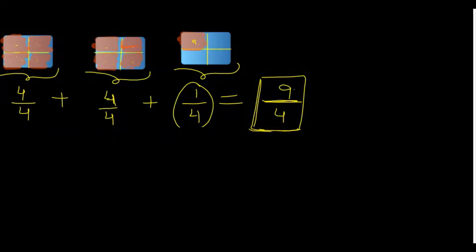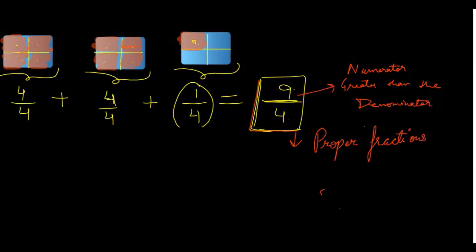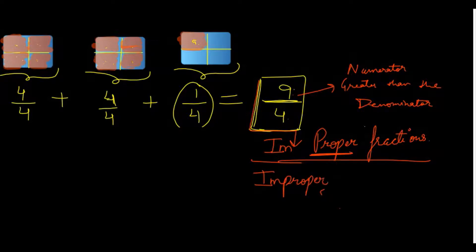Can you observe something about nine by four? The numerator nine is greater than the denominator four. Fractions where the numerator is greater than the denominator are called improper fractions. Proper fractions are those where the numerator is less than the denominator. So nine by four is an improper fraction.